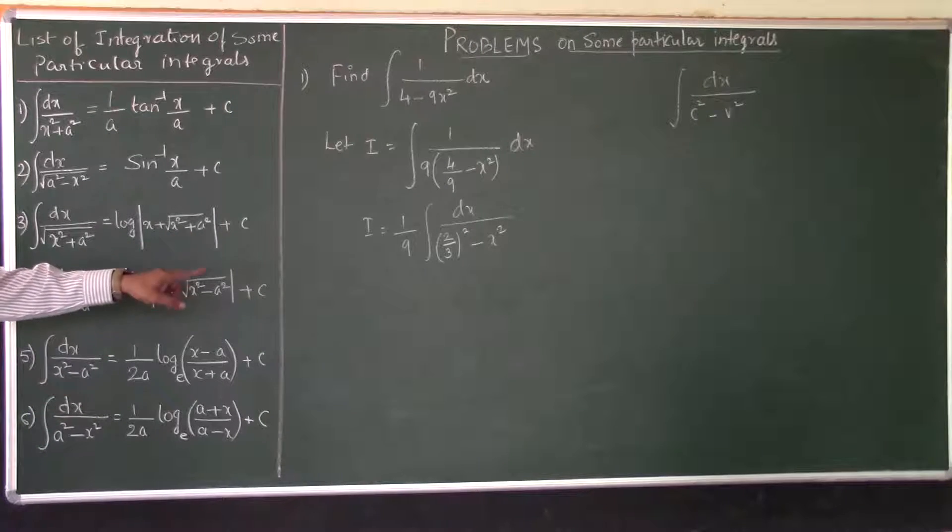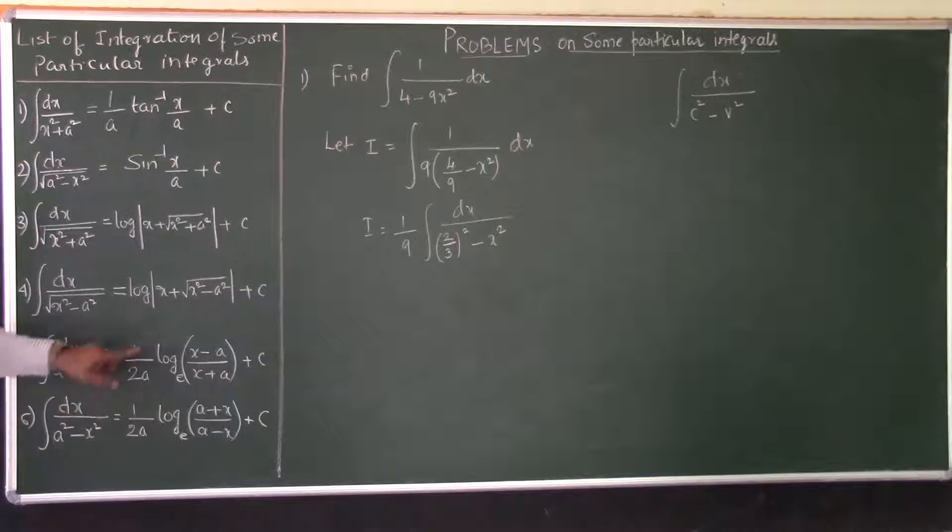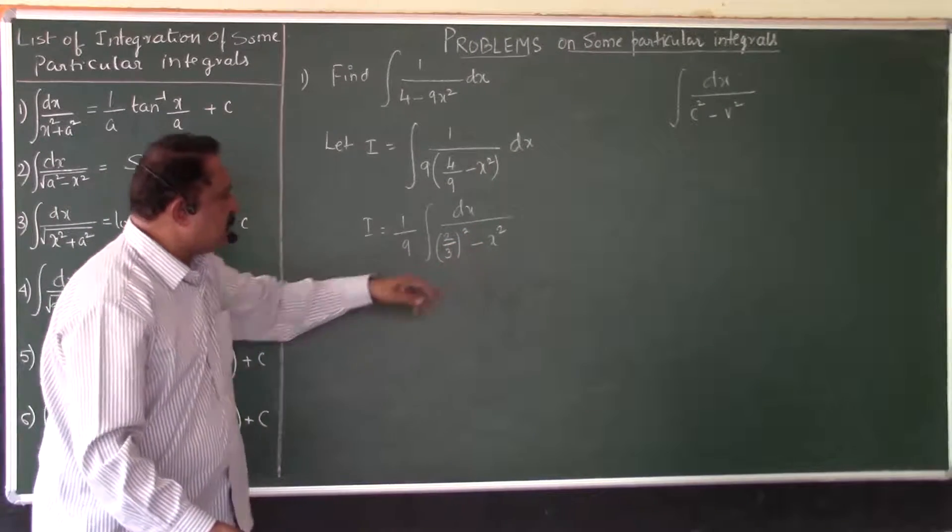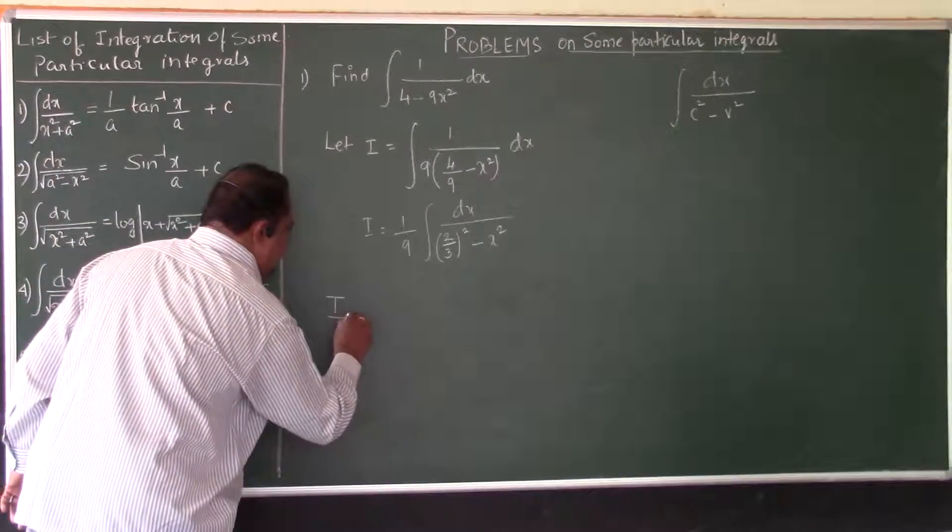A square is how much? 2 by 3 square. So what is the value of A? 2 by 3. And x square is x square only. See now how the coefficient of x square is made 1. So the answer I will directly write.